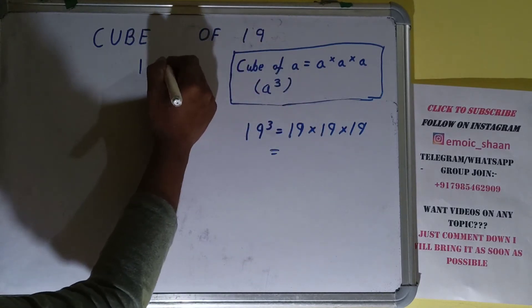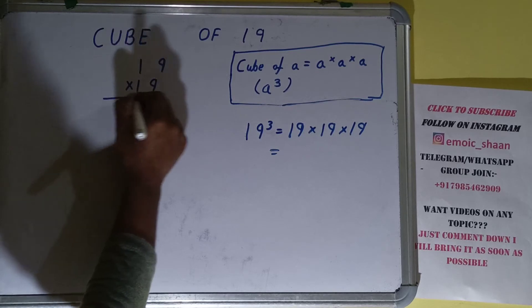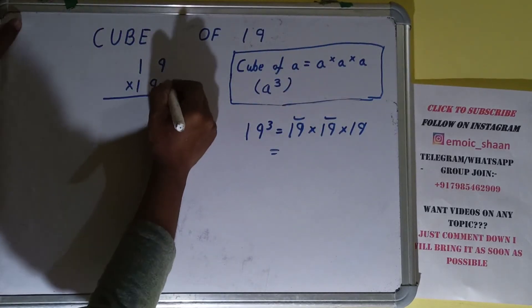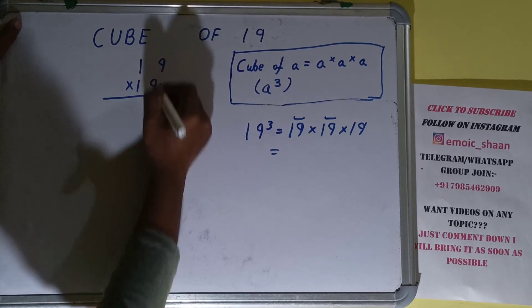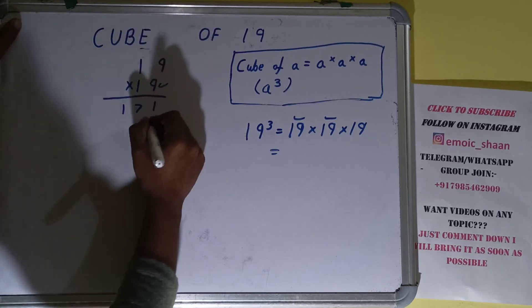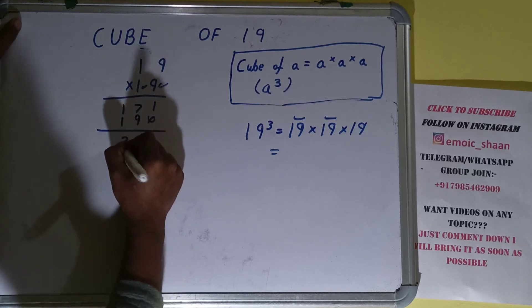So 19 into 19, we'll multiply the first pair. 9 times 9 is 81, 1 down, 8 carry. 9 times 1 is 9 plus 8 is 17. Now 1 times 9 is 9, 1 times 1 is 1, just add them: 361.